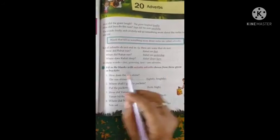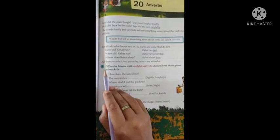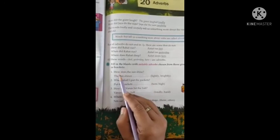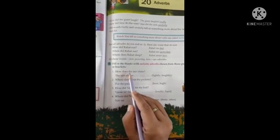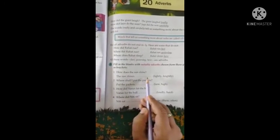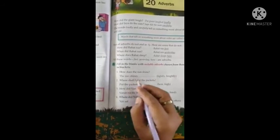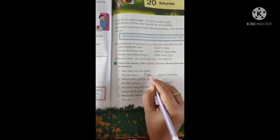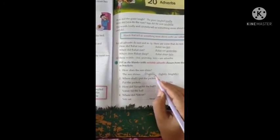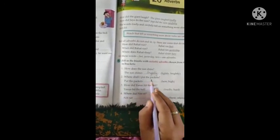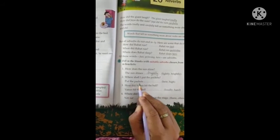Fill in the blanks with the suitable adverbs chosen from those given in the brackets. Look at the first question: How does the sun shine? The sun shines dash. Which adverb will be here? The sun shines brightly. Second one: Where shall I put the packets? Put the packets dash.